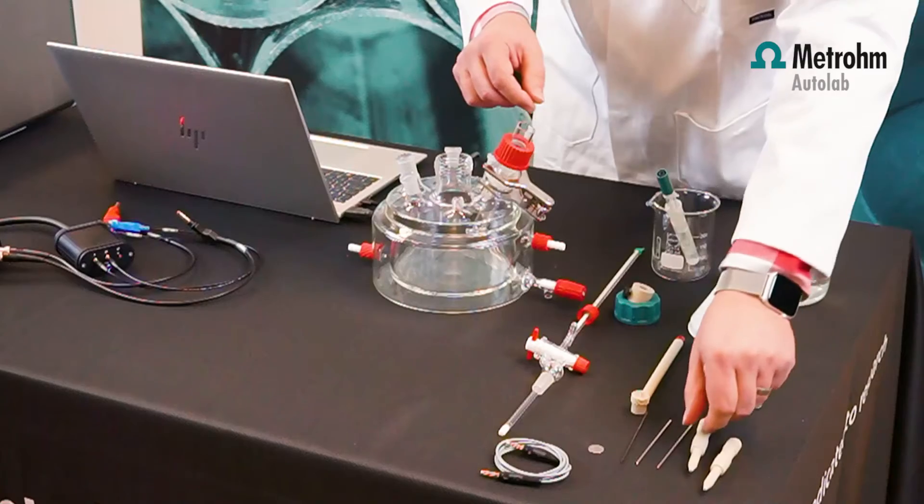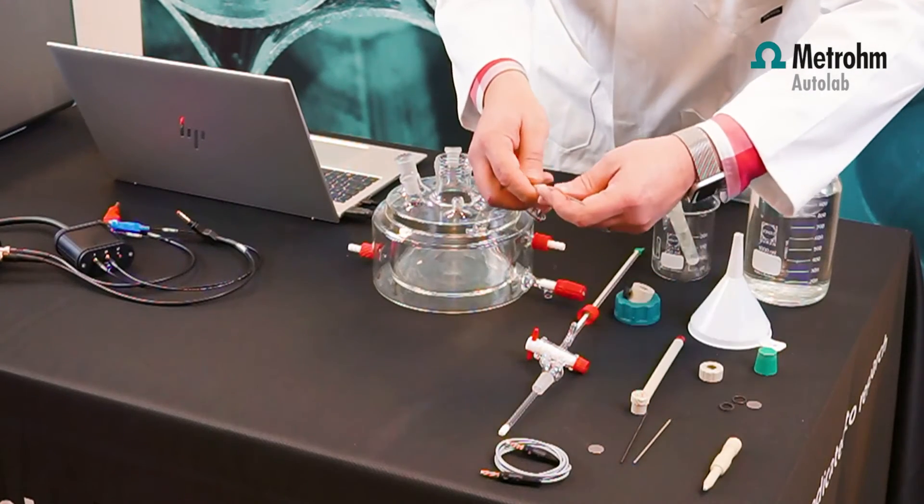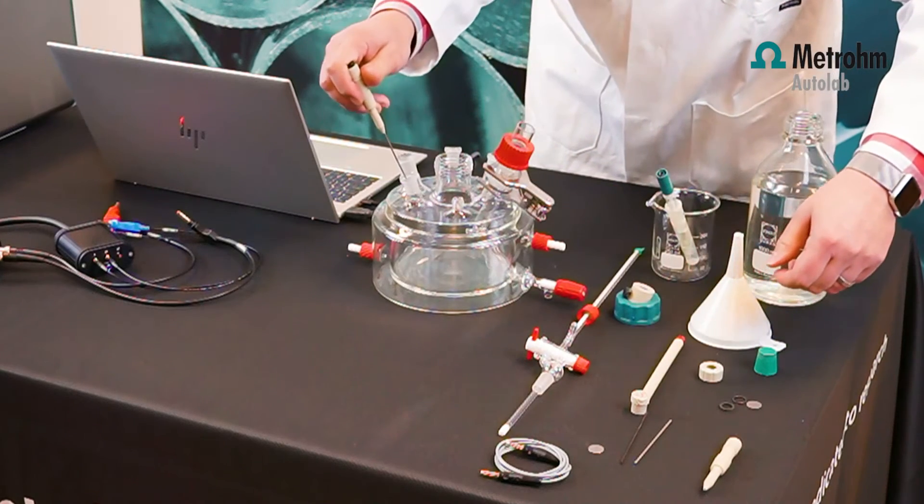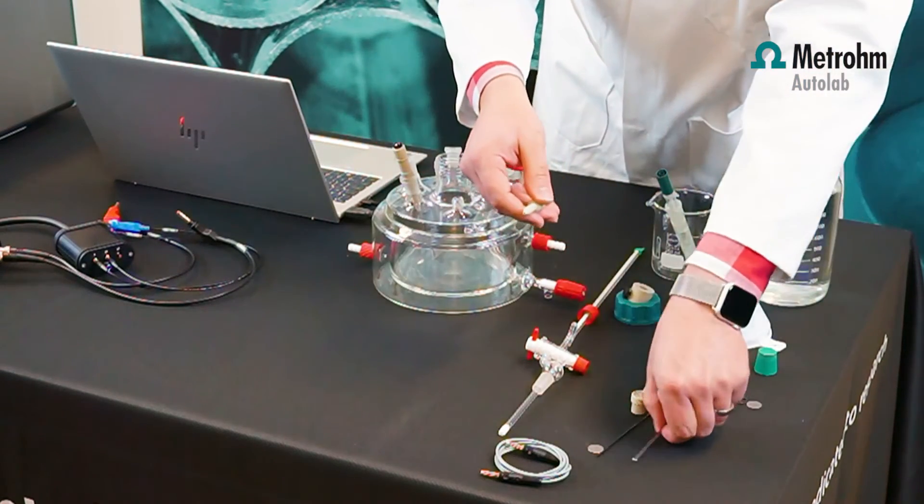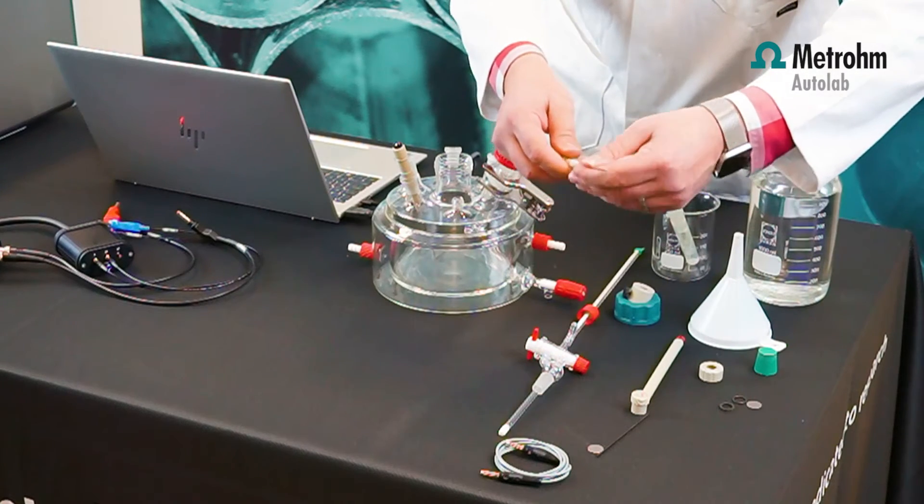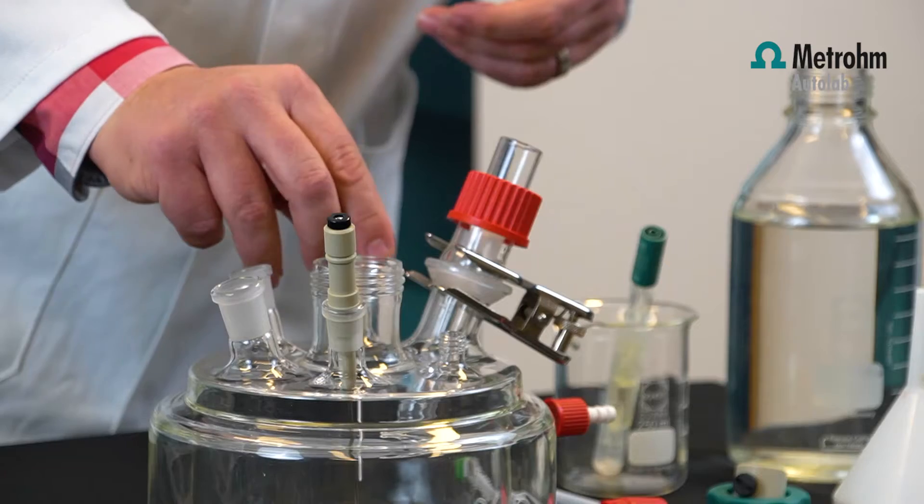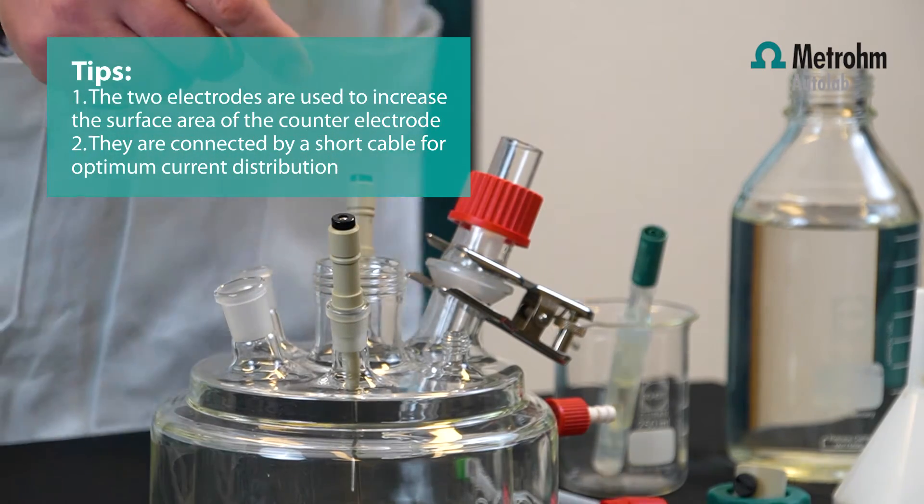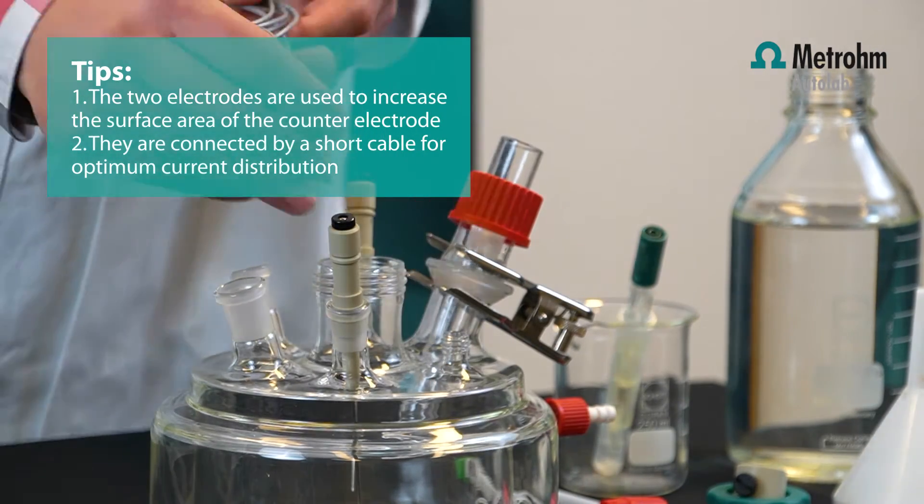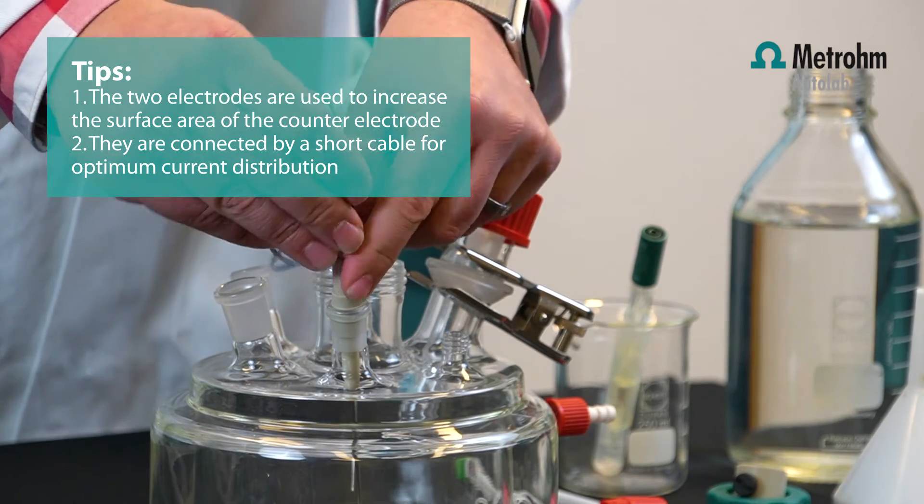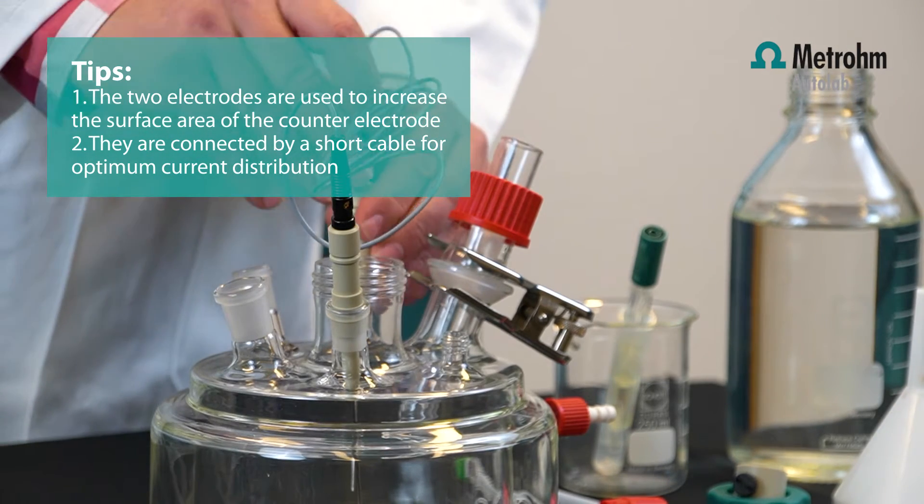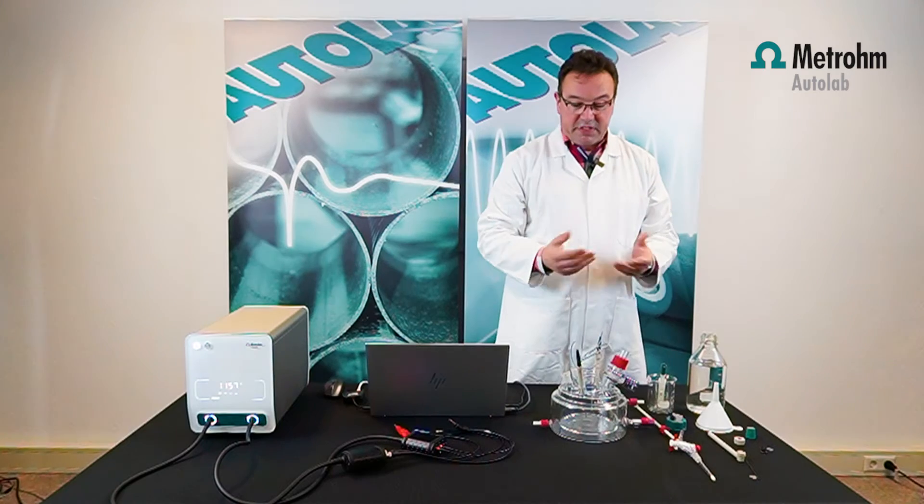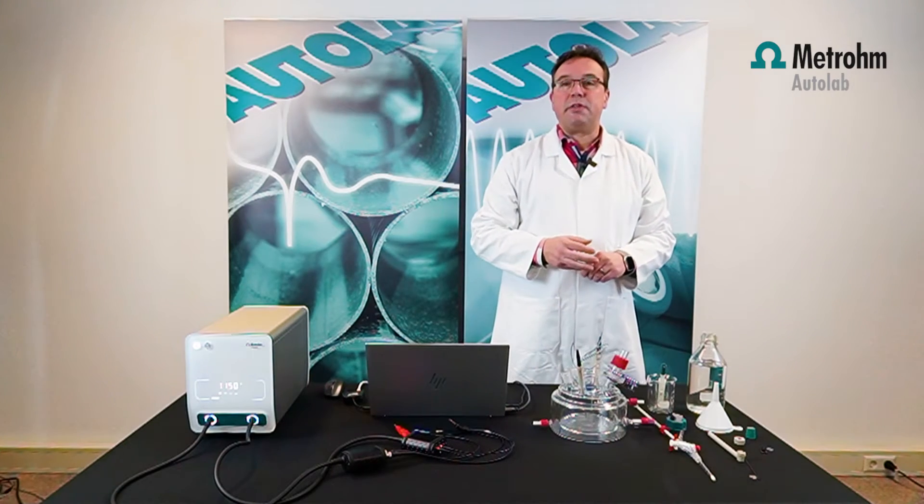Then we have the counter electrodes. Counter electrodes go in here, so we have the stainless steel on one side and stainless steel on the other side. Those two are connected with a small cable to increase the surface area of the counter electrode. The surface area of the counter electrode is important for proper current distribution. Standard it comes with stainless steel 316 electrodes.